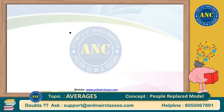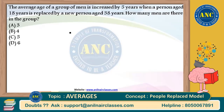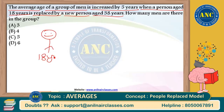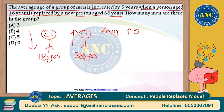See the next question. Every question is a connection of dots. This is a dot connected from the previous two questions. The average age of a group of men is increased by five years when a person aged 18 years is replaced by a new person aged 38 years. How many men are there in the group? In the previous question, how many men were given. Now it is the reverse — a different connection of dots.